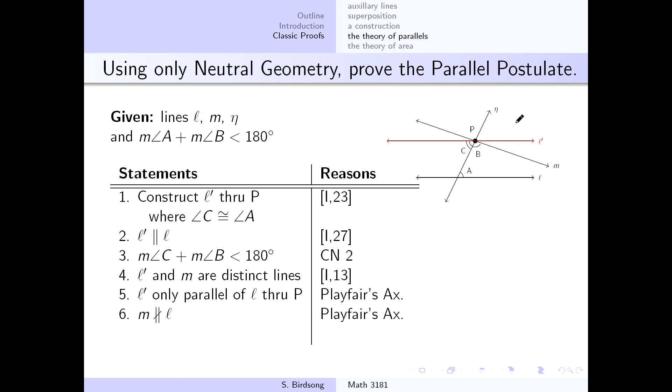And we just said that M is not that same line, which means M can't be parallel to L. Again, according to Playfair's axiom. So just using that axiom.